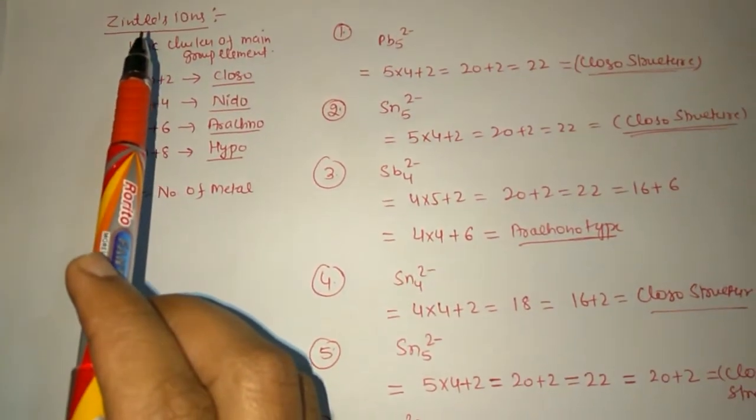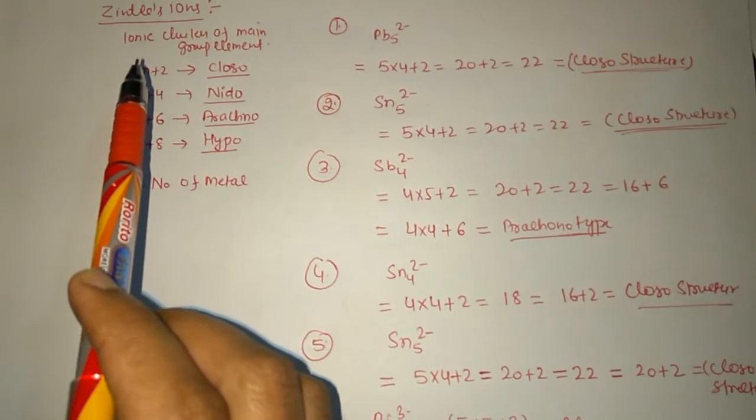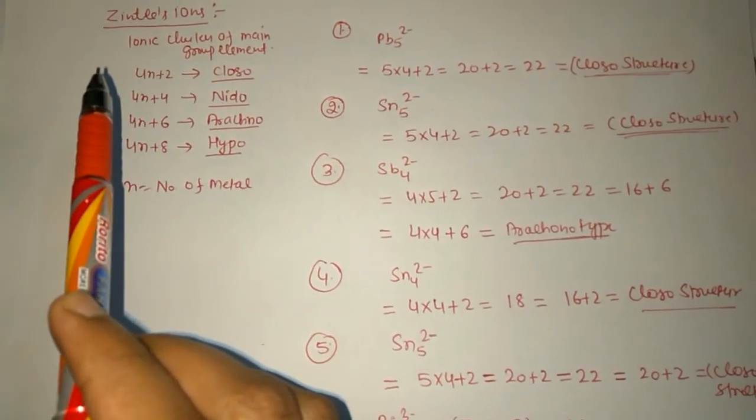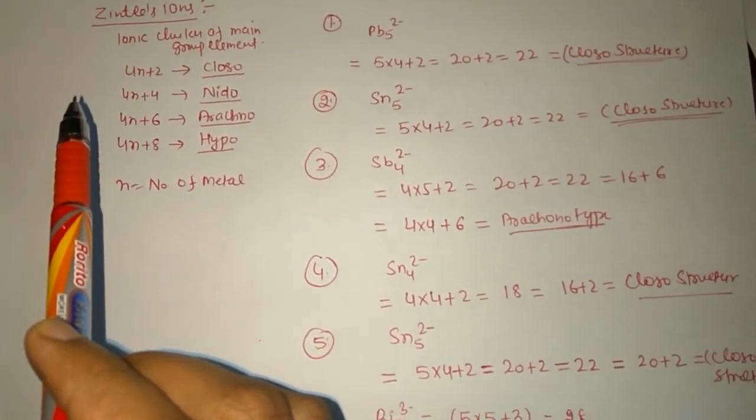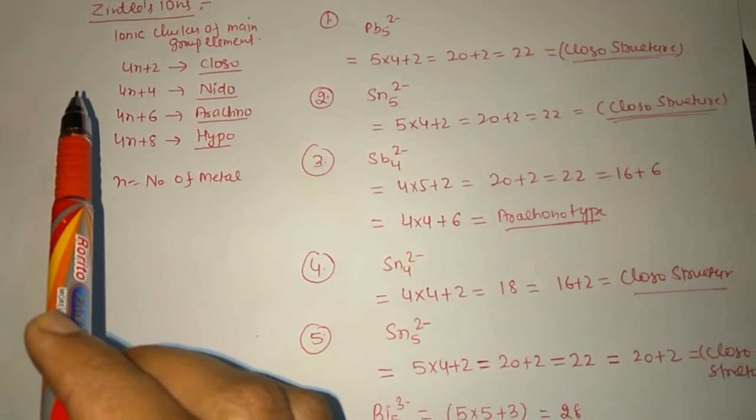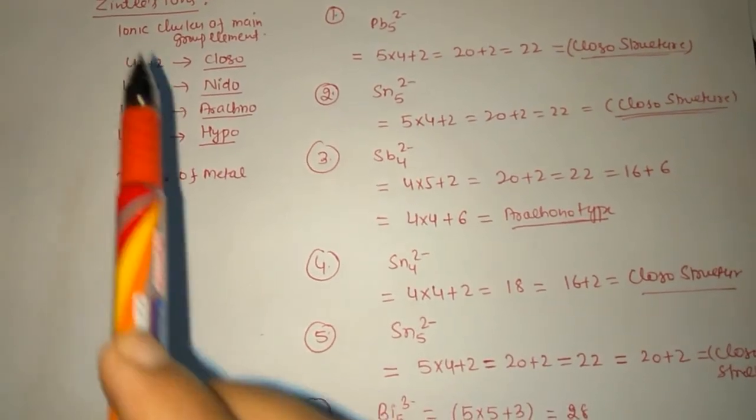Today we are going to discuss an important compound, the zintl ion, and we will predict what is the zintl ion structure: clozo, nido, or arachno structure. In case of 4n+2, it is clozo; 4n+4, it is nido.